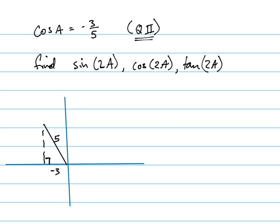That's what it means that the cosine of a, so here's my angle a right here, and it terminates in quadrant 2, because it could have terminated in quadrant 3, because cosine is negative in quadrant 2 or 3. So it has to tell you where it terminates.